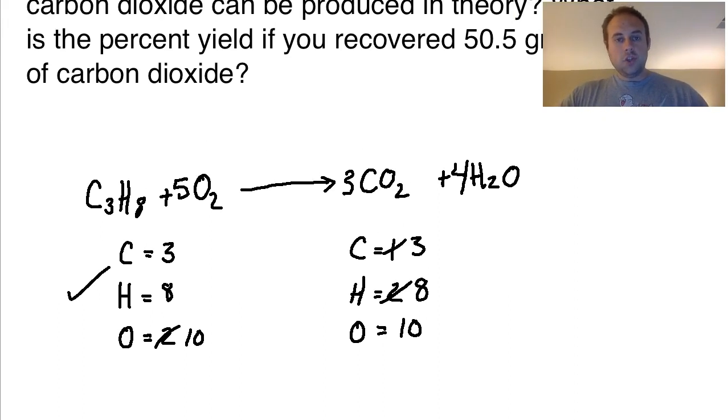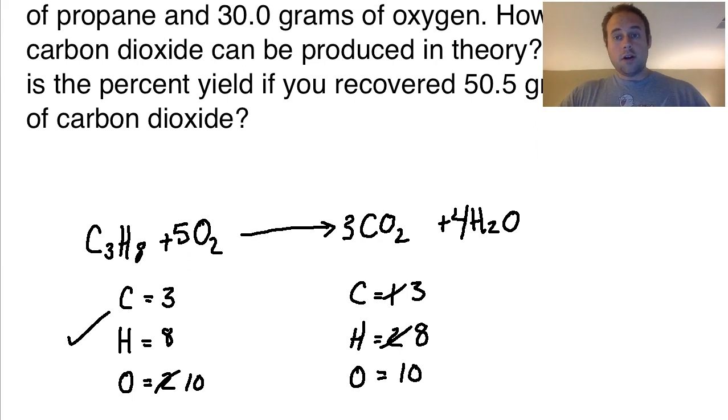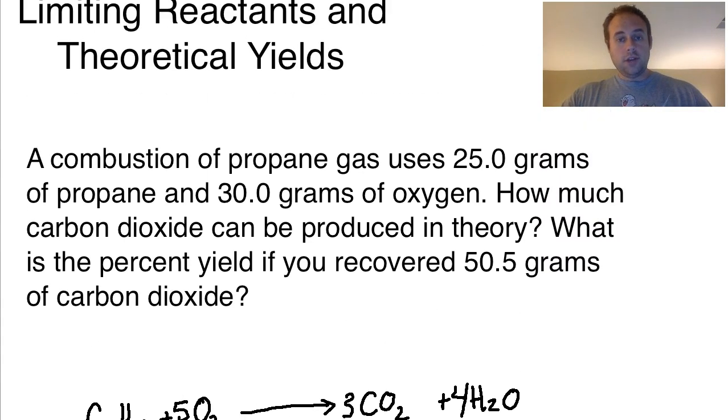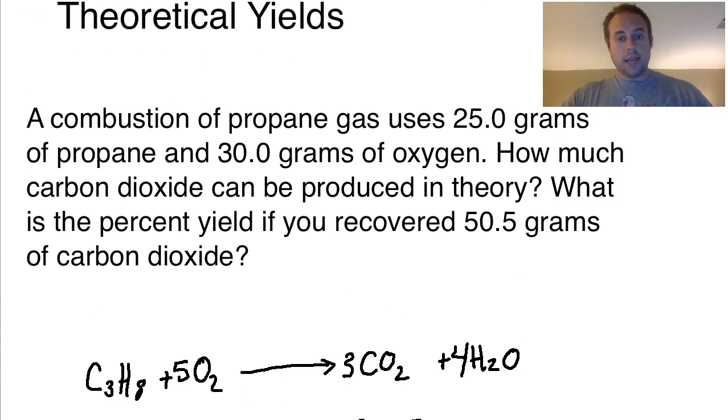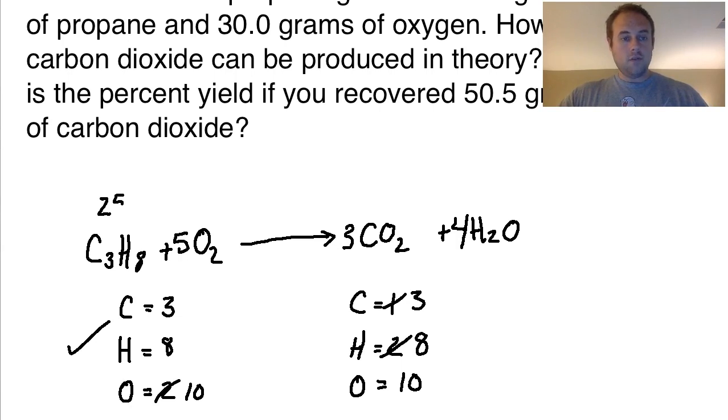So the next thing that I can do is I can get ready to start running the calculations for my limiting reactant, provided I'm given that information, which I am. So if we look here, 25 grams of propane and 30 of oxygen. So I've got 25 grams of propane and I have 30 grams of molecular oxygen.